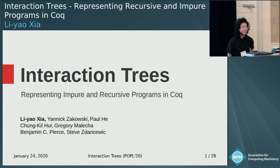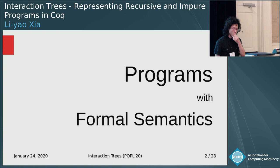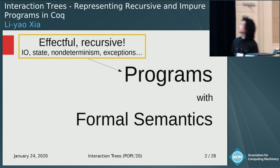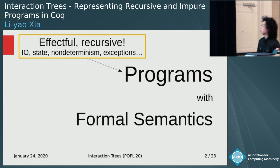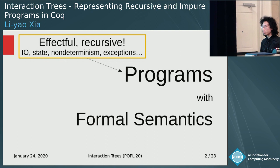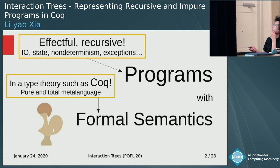So this is joint work with my many co-authors. To reason about programs, programs must have meaning. And the programs we're interested in are effectful — they can have state, exceptions, and they can even have recursion. The meaning we give to programs is defined in a formal language, such as Coq, which, interestingly, means you are modeling these effectful recursive programs in a pure and total meta-language.